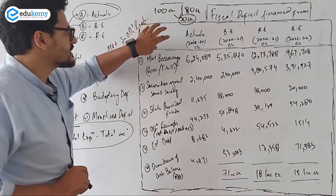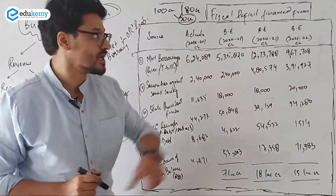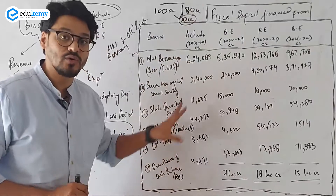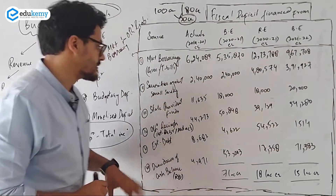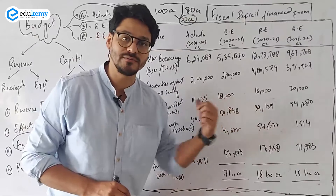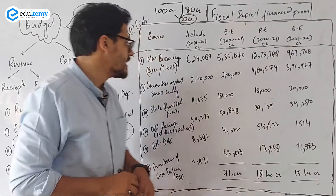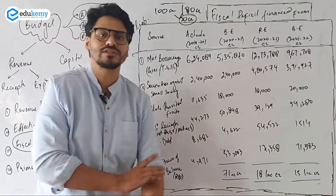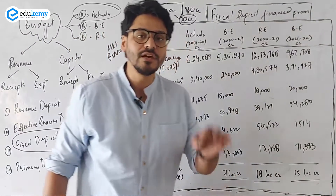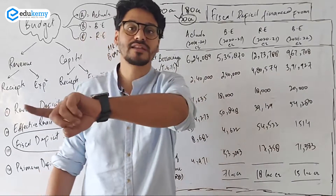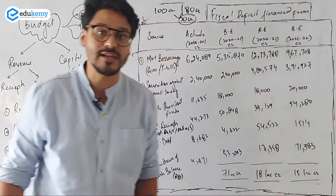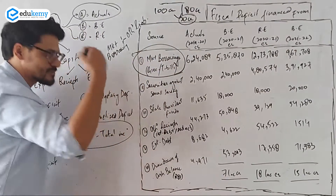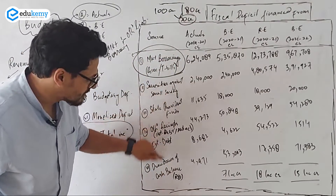Now these are the sources of fiscal deficit — fiscal deficit is financed from these sources. A question might come in this year's preliminary exam with all the sources as options. You have to remember these sources of fiscal deficit. The source of fiscal deficit as mentioned in books is market borrowing and other liabilities — market borrowing is one part; the other liabilities include several more sources.